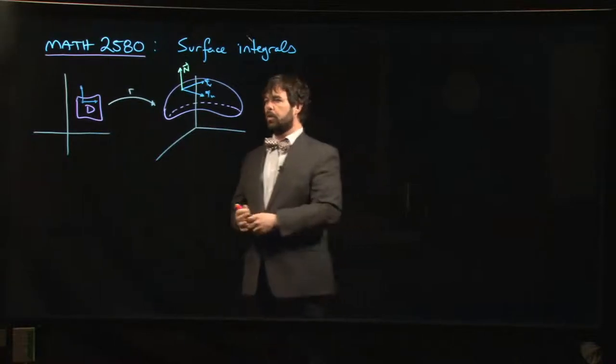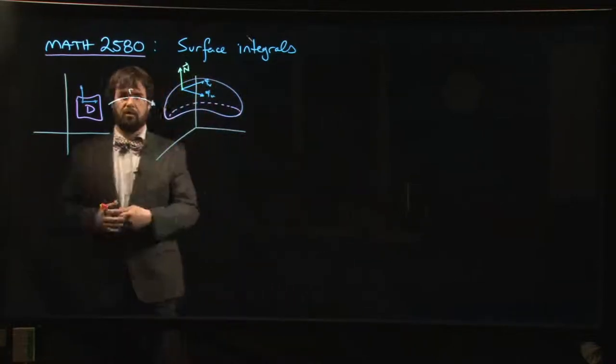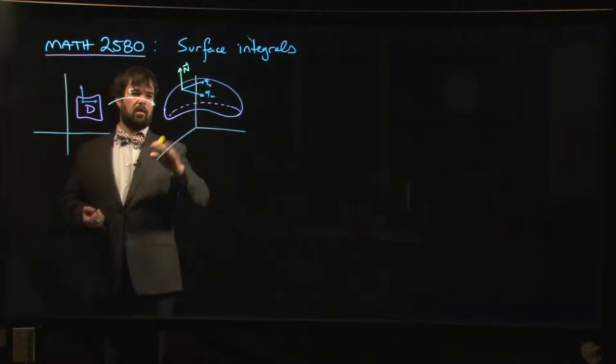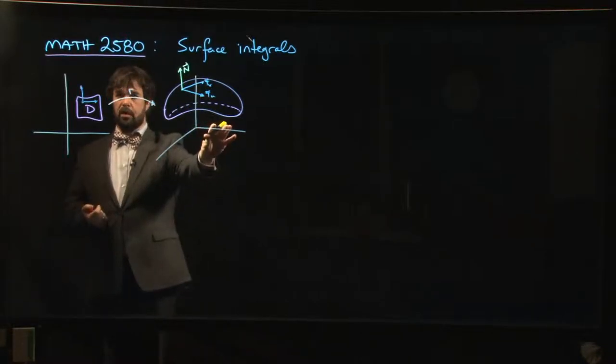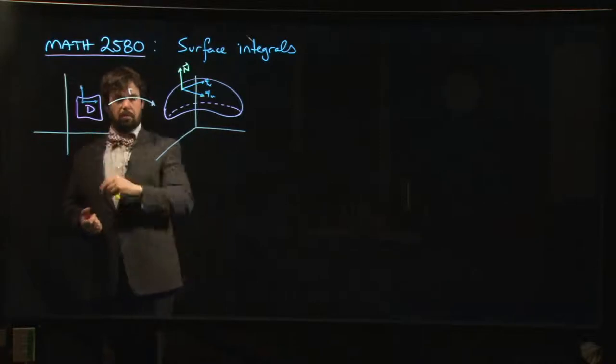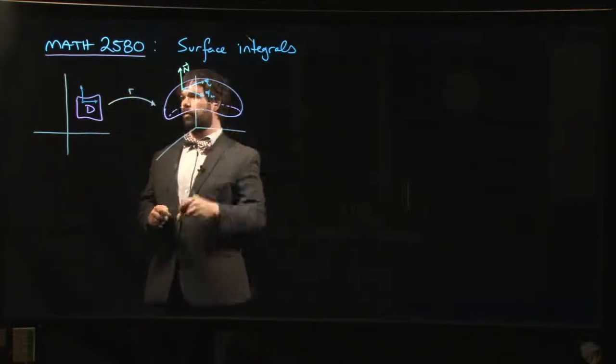So last time we introduced this notion of a parametrized surface, and so we had this idea that you've got some surface over here in R3. You want to be able to describe it. Essentially you want to establish a coordinate system on this surface.